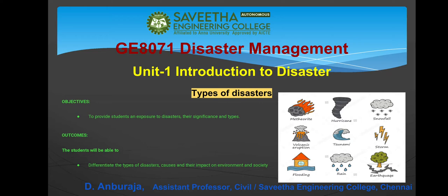Hello everyone. Now we are going to discuss about types of disasters. Unit 1: Introduction to Disaster. The subject is Disaster Management. This unit objective is to provide students an exposure to disasters, their significance and types. The outcome is we will be able to differentiate the types of disasters, causes and their impact on environment and society.